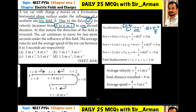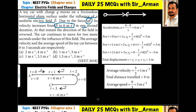At the instant when the direction of the field is reversed, the car continues to move for two more seconds. The question asks for the average velocity and average speed between 0 to 3 seconds. Our concept of uniformly accelerated motion should be very clear. The car accelerates from 0 to 6 meters per second in one second. When the field reverses, the same force acts in the reverse direction, so from 6 to 0 it will take the same time. For 2 seconds it moves forward, then for the next one second it accelerates from 0 to 6 meters per second in the reverse direction.